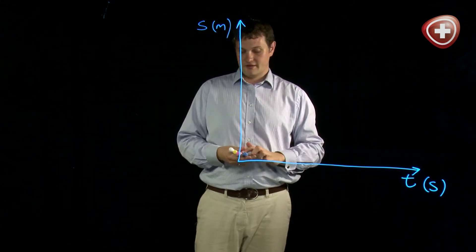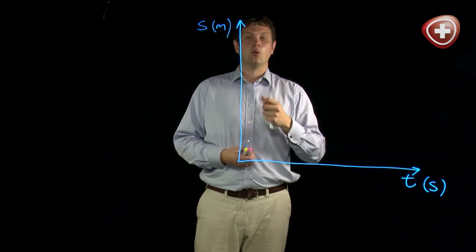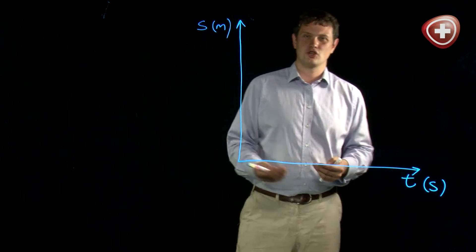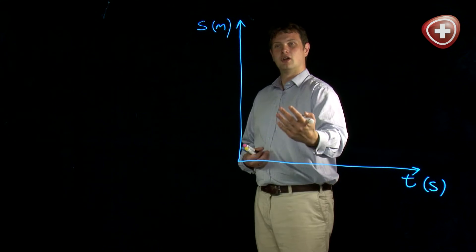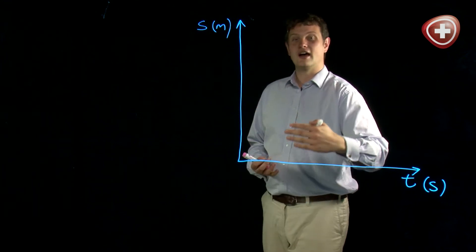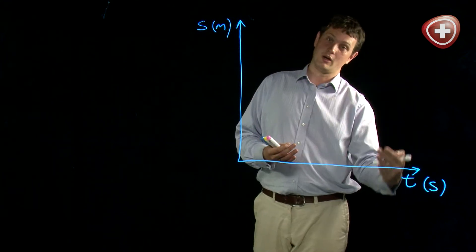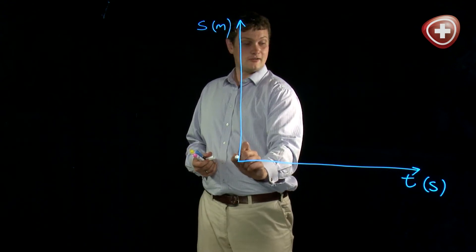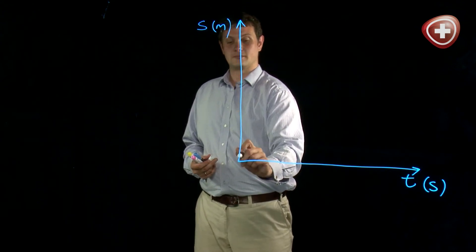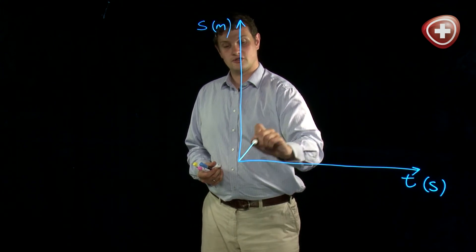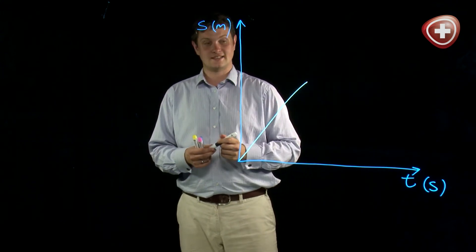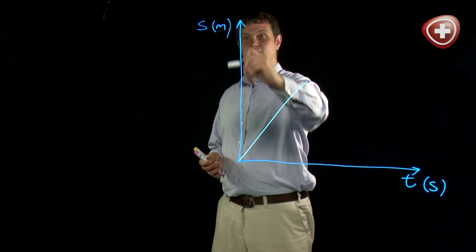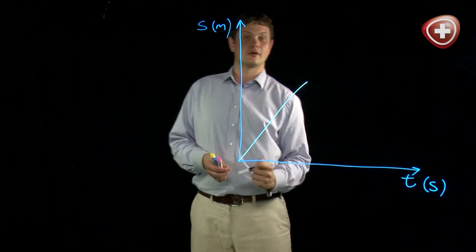Now we've got our axes, we can start thinking about what our graph is going to look like. I'm going to plot a graph of me going to the shops — I go to the shops, I stop there for a while, and then I come back home. I'm going to start at home with zero time and zero displacement. Then, as I go to the shops, I'm walking at a steady speed, so my displacement is increasing as time goes along.